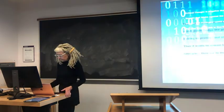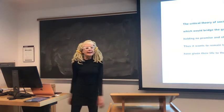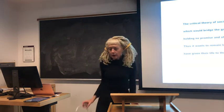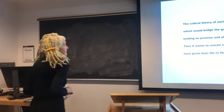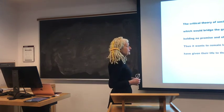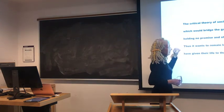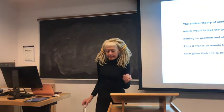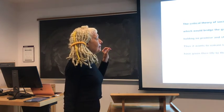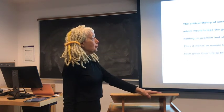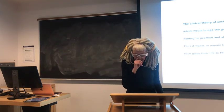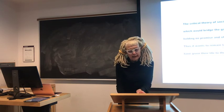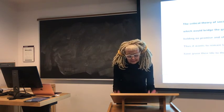It gets complicated. The critical theory of society possesses no concepts which are going to bridge the gap between present and future — this is from One Dimensional Man. It holds no promises and shows no success. It remains negative because Marcuse, influenced by Nietzsche, says he wants to remain loyal to those who, without hope, have given their life to the great refusal.